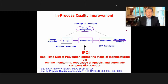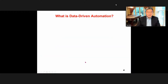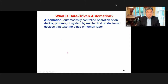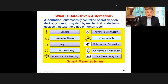What is data-driven automation? Automation means automatically controlling the operation of a device, process, or system by mechanical or electrical means, replacing human labor. Smart manufacturing emphasizes sensors, IoT, big data computing, machine learning, and focuses on advanced manufacturing systems with cybersecurity, robotic automation, virtualization, data fusion, and analytics. Smart manufacturing provides effective capabilities to achieve data-driven automation and to achieve high quality, productivity, flexibility, and reduced cost.